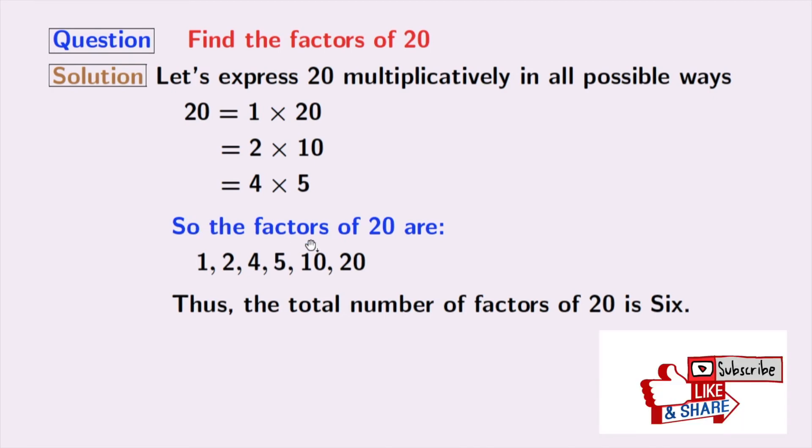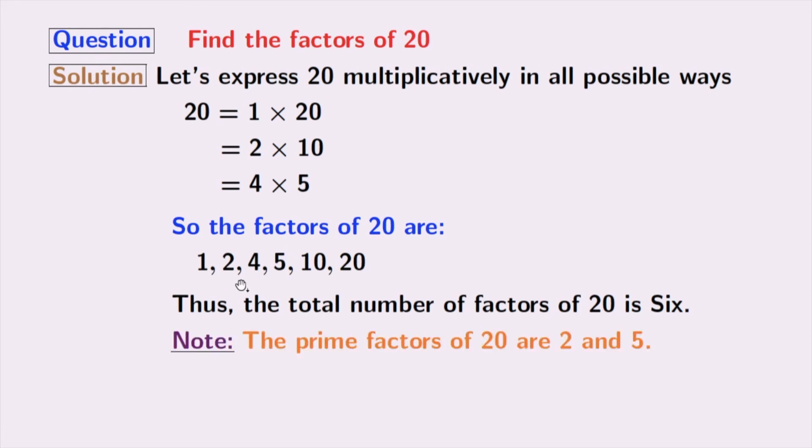The total number of factors of 20 is 6. We see that 2 and 5 are prime numbers because these numbers have no divisor other than 1 and the number itself. So, the prime factors of 20 are 2 and 5.